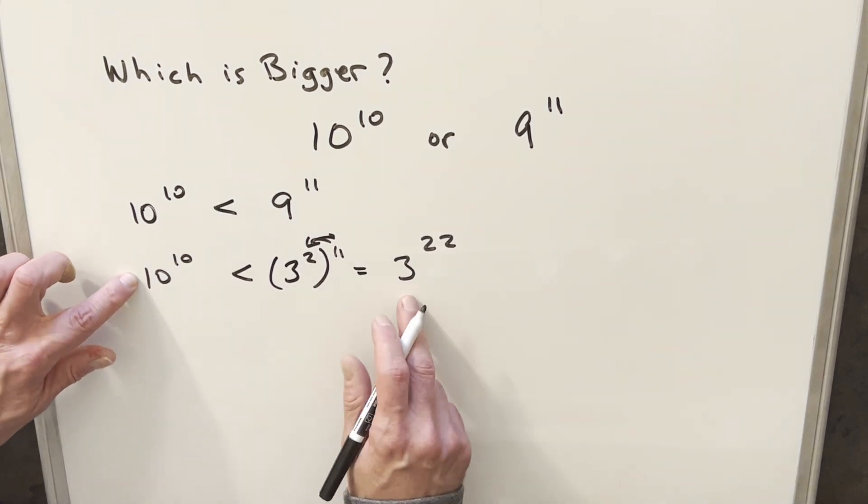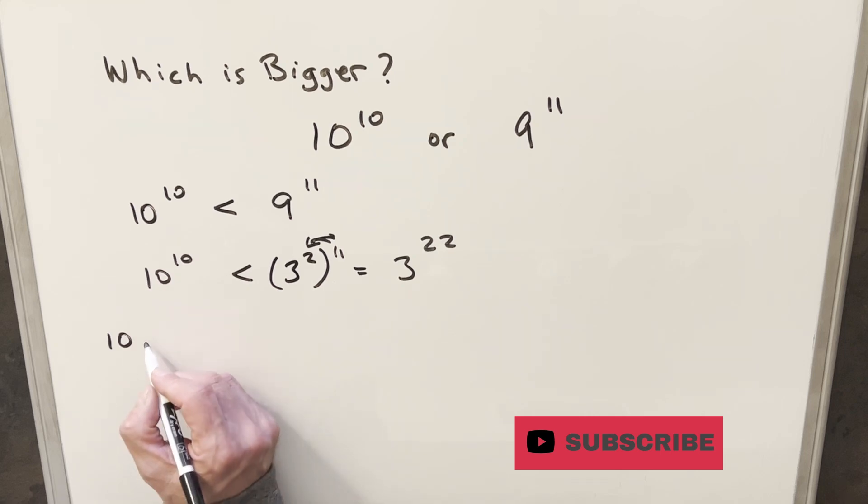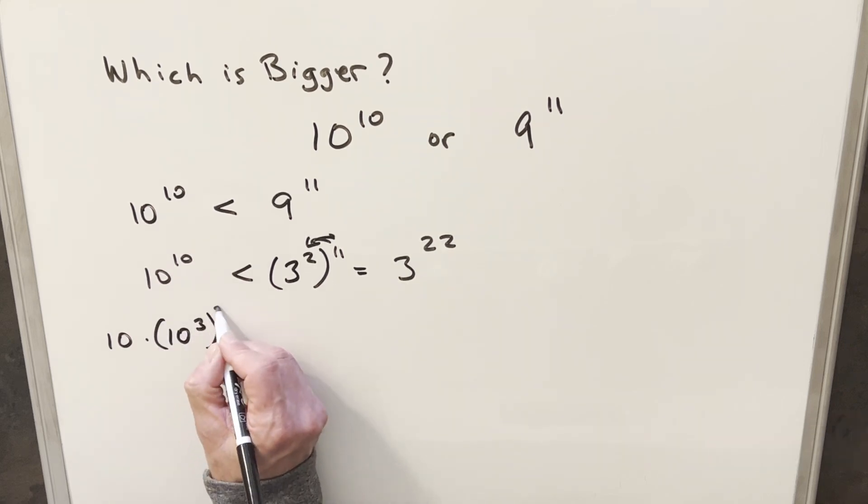But then what I want to do next is break it up on both sides. So I'll take a, for 10 to the 10th, I'll take a 10 out, so then we're left with 10 to the 9th, but then for 10 to the 9th, I can write that as 10 cubed, all cubed.